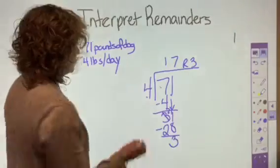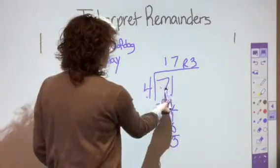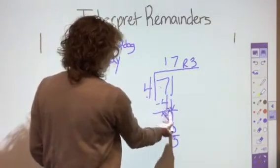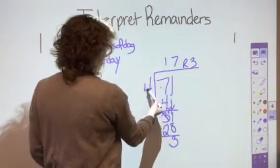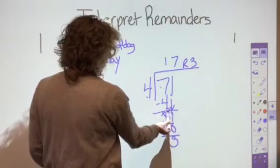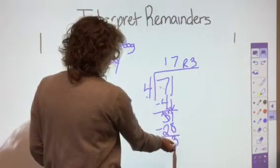How many times does four go into seven? One times. One times four is four. Seven minus four is three. Bring down the one. Four goes into 31 seven times. Seven times four is 28. And then we subtract and we get three.